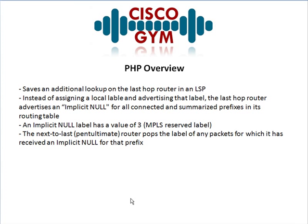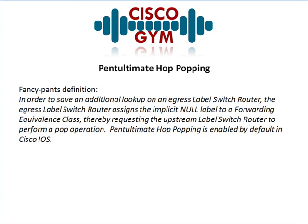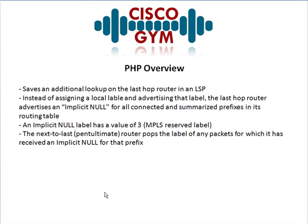The overview of PHP — I think this combined with the example helps to cement this in your brain a little bit better than the fancy-pants definition. The number one benefit of PHP is that it saves an additional lookup on the last hop router in a label switch path. Instead of assigning a local label and advertising that label, the last hop router advertises something called an implicit null for all connected and summarized prefixes in its routing table. I would memorize that summarized prefixes bit for the test, because it might come back to bite you if you don't remember it.